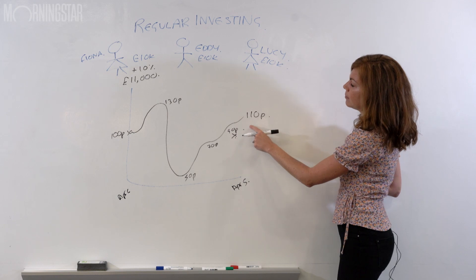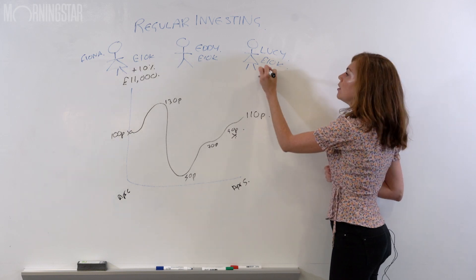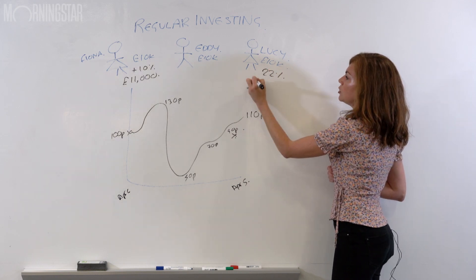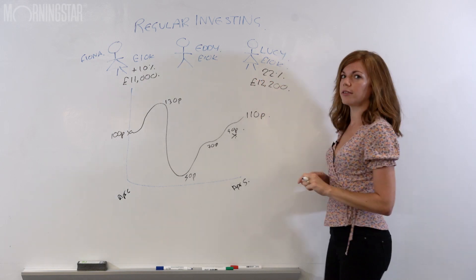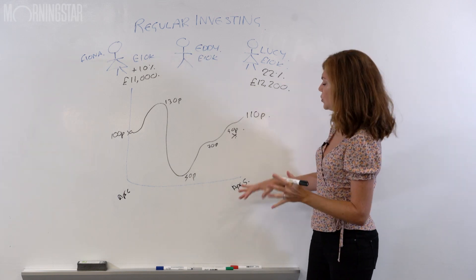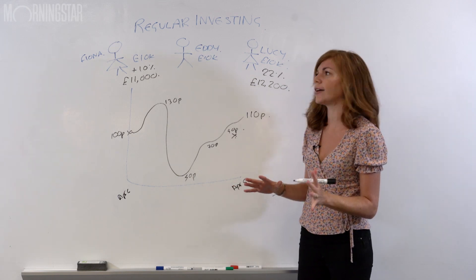She actually ended up with greater gains than Fiona. She's up from 90p to 110p. Her money grew by 22%. She's ended up with £12,200. But it was all very stressful because she had to remember to do that before the end of the tax year and get around to it.